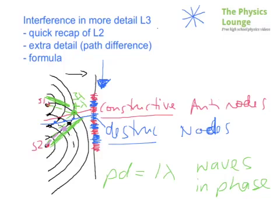So from source 2, it's 2 and a half wavelengths for the path. From source 1, you've got 1, 2, 3 wavelengths.